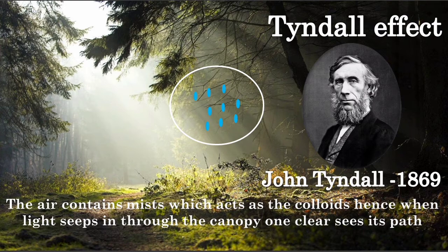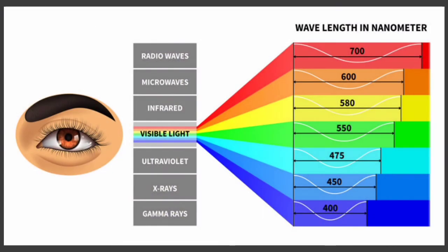We know that white light is a mix of seven colors, and all these lights have different wavelengths. The red have the maximum wavelength in nanometers and the blue and violet shades have shorter wavelength, and hence it is scattered more easily.